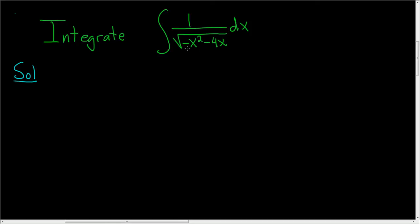In this problem a good strategy looks like completing the square. Let's start by writing down minus x squared minus 4x. Now in order to complete the square the coefficient of x squared has to be 1.